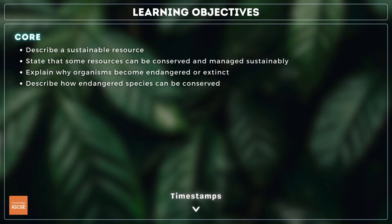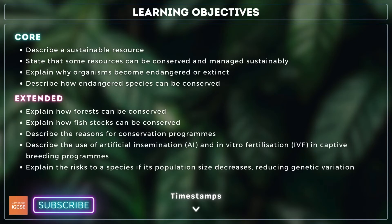you need to describe the term sustainable resource, explain why organisms become endangered or extinct, and describe how endangered species can be conserved. For extended, you also need to explain how forests and fish stocks can be conserved, describe reasons for conservation programs, describe the use of artificial insemination and in vitro fertilization in captive breeding programs, and explain the risks to a species if its population size decreases.